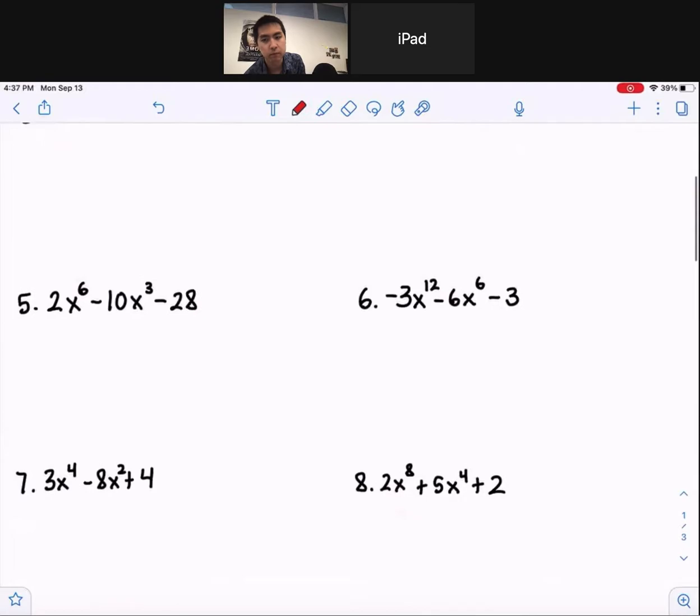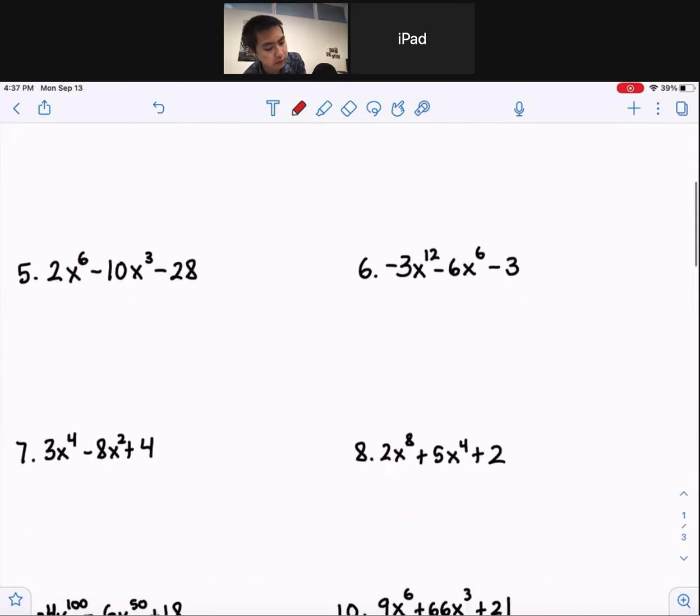Number 5. Something that you always have to look out for is we can factor out a 2 from each: x to the 6 minus 5x to the 3rd minus 14.